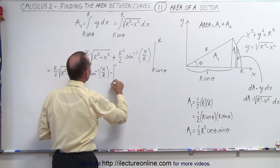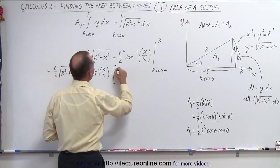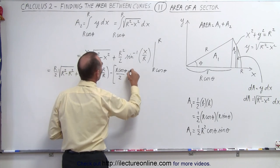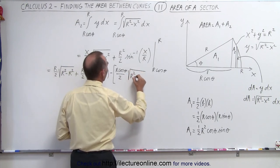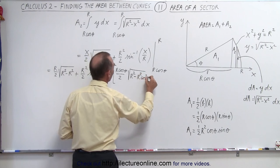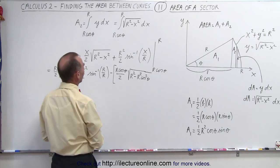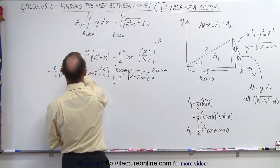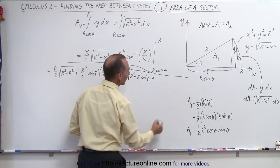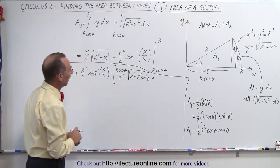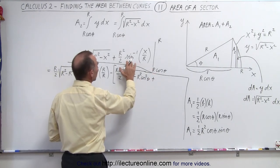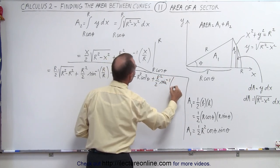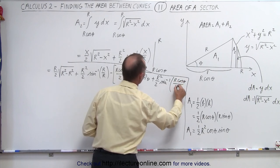Subtracting the lower limit evaluation: we get r·cosθ divided by 2 times the square root of r² minus r²·cos²θ, plus r² over 2 times the inverse sine of r·cosθ over r. We close the bracket because we're subtracting this entire quantity.